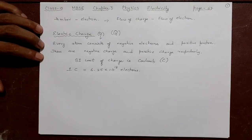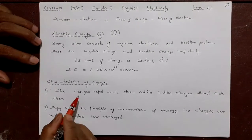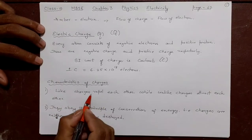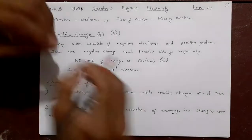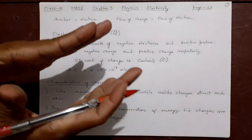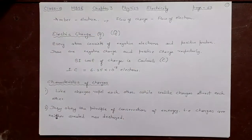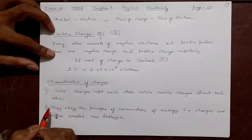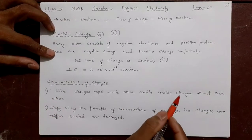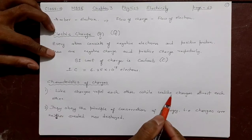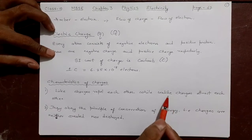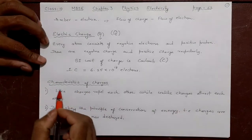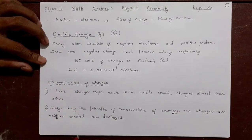Next are the characteristics of charge — how they behave. There are two properties. Like charges: positive and positive together will repel and go away from each other, just like two magnets with the same pole pushed together. For unlike charges, if you bring a positive charge near a negative charge or vice versa, they will attract and try to touch each other.